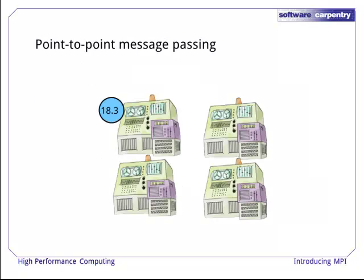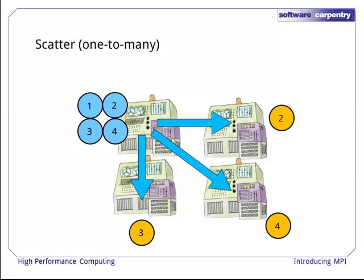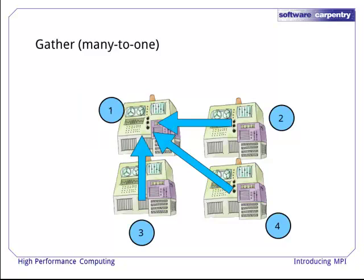The usual message passing stuff is point-to-point communications, where communication is one-to-one: one process has some data which it sends to another process, possibly on another node. But there are other modes of communication frequently needed for parallel computations. For instance, it's often useful to broadcast data, which is a one-to-many operation — one process has a piece of data and broadcasts it to many or even all of the other processes. A close relative of broadcast is scatter, where one process divides values between many others. The inverse of scatter is gather, in which many processes have different parts of the overall picture, which are then brought together to one process.